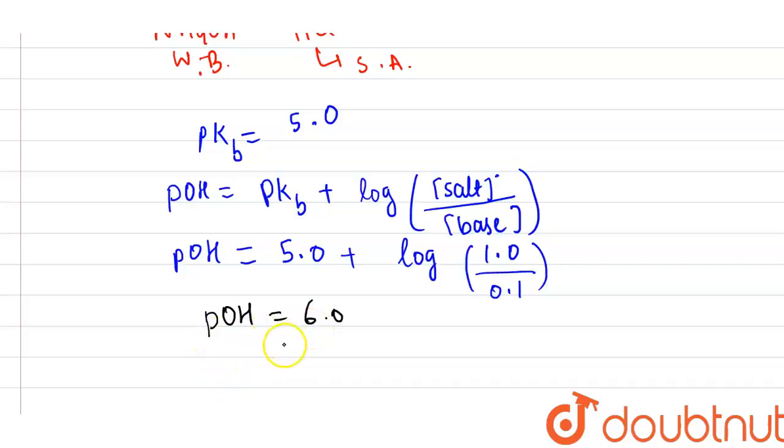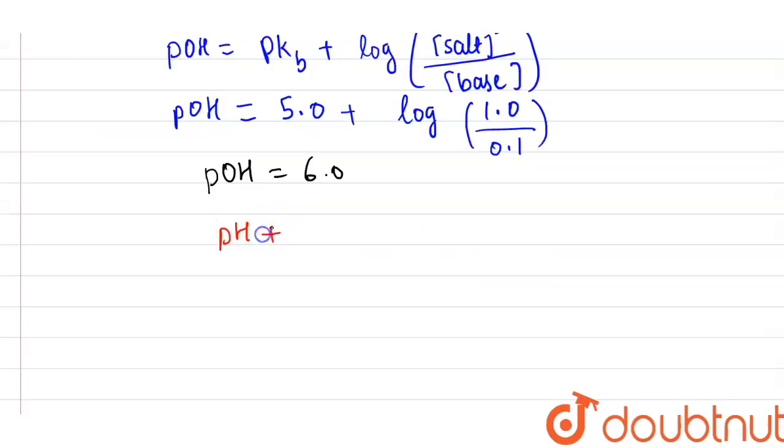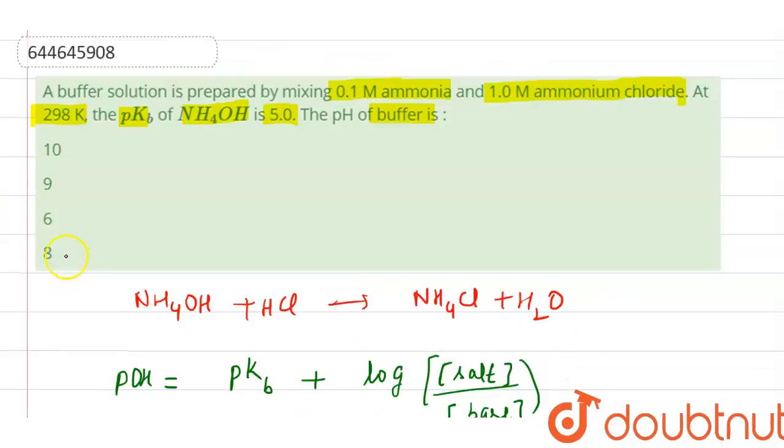To calculate the pH of solution, we use the formula pH plus pOH equals 14. So we calculated the value of pOH, which is 6. Therefore, pH equals 14 minus 6, which equals 8. Option 4 is the correct answer - pH of buffer is 8.